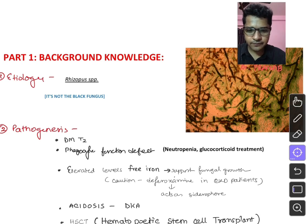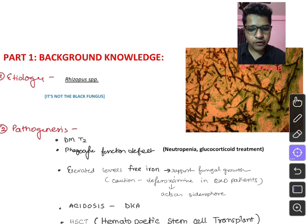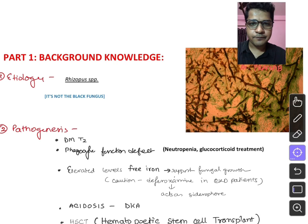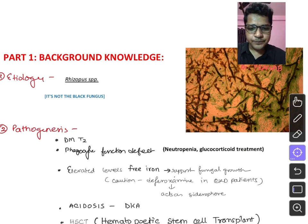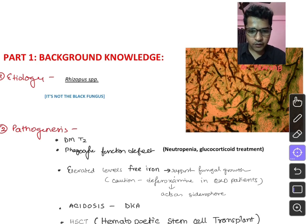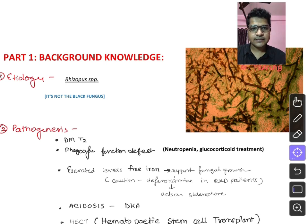Patients with phagocyte function defects — such as those with neutropenia or those receiving glucocorticoid treatment like steroids — are at high risk. In this COVID-19 context, steroid use is the most important cause of emergence of systemic mycosis. Another important factor is elevated levels of free iron, which supports fungal growth, because mucormycosis growth is enhanced by siderophores, which are iron-containing particles.